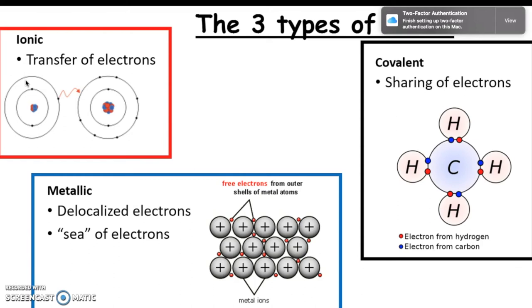In ionic bonding, you have a complete transfer of electrons from one atom to the next. This atom here has one valence electron and gives it to this atom that has seven valence electrons. That's ionic bonding.